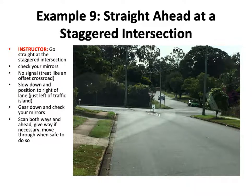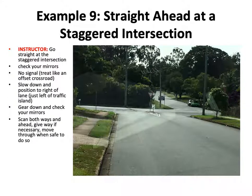Example nine: staggered intersection. Go straight at the staggered intersection, please. Check your mirrors, no signal. Treat it like an offset crossroad — slow down and position to the right of the lane, which is just left of the traffic island. Gear down and check your mirrors. Scan both ways and ahead, give way if necessary, move through when safe to do so. There's a give way sign at that situation.